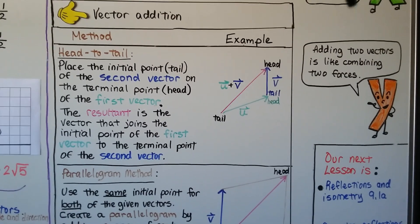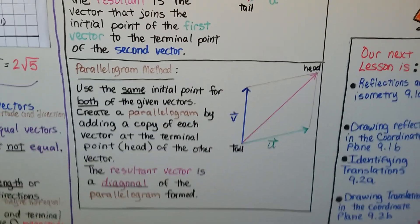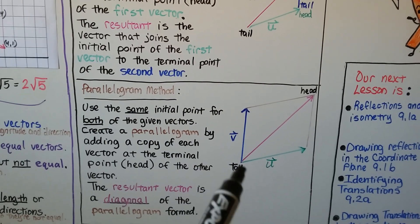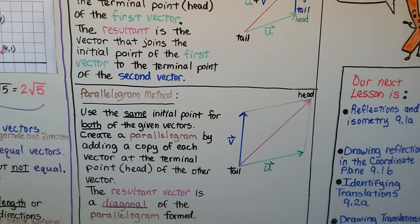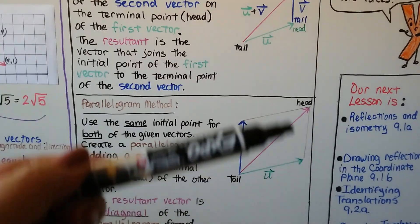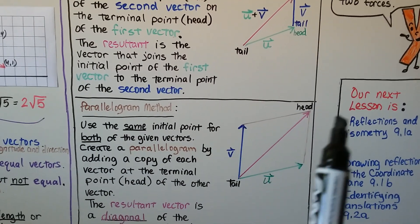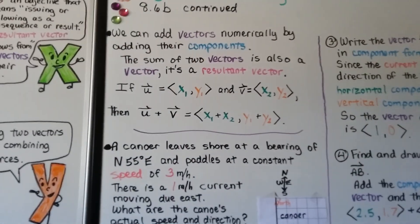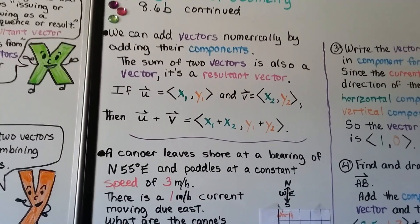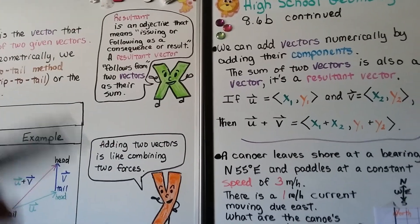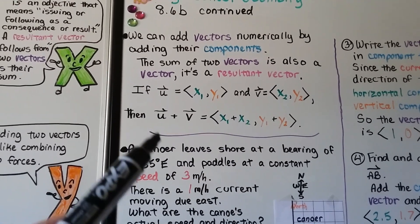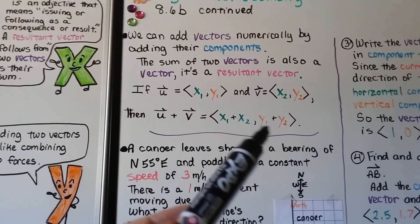Adding two vectors is like combining two forces. In the parallelogram method, we use the same initial point for both given vectors and create a parallelogram by adding a copy of each vector at the terminal point of the other. We make these sides parallel and the resultant vector is the diagonal of the parallelogram formed. We can also add vectors numerically by adding their components. If vector u = 〈x₁, y₁〉 and vector v = 〈x₂, y₂〉, then vector u + vector v equals the x-values added together and the y-values added together.